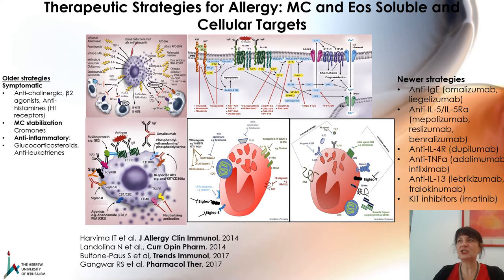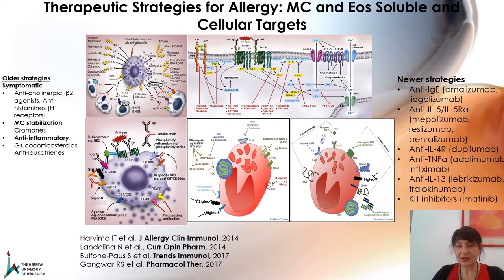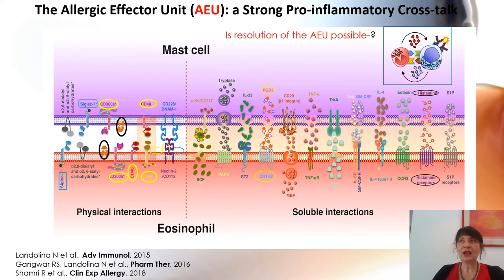In spite of all these new drugs used in a personalized way — meaning if a patient has a lot of IgE you give anti-IgE, if it is eosinophilic asthma you give anti-IL-5, and so on — we still don't have the magic bullet. There is still ongoing research on how to stop the release of mast cell mediators, stop signal transduction of mast cells and eosinophils, and inhibit chemotaxis of eosinophils.